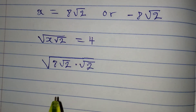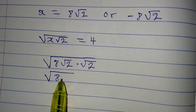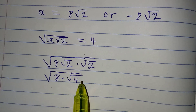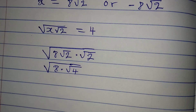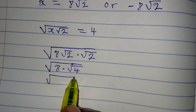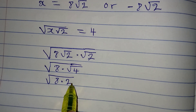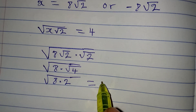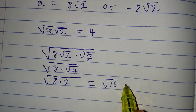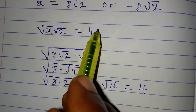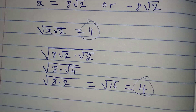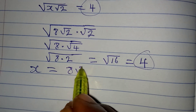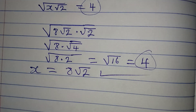Will this give us 4? Let's go. This is the same thing as 8 multiplied by root 2 times root 2, which gives root 4. Since 4 is a perfect square, its square root is 2, so we have 8 multiplied by 2, giving the square root of 16, which is 4. That is what we got in the original equation, meaning x equal to 8 root 2 satisfies the given equation.